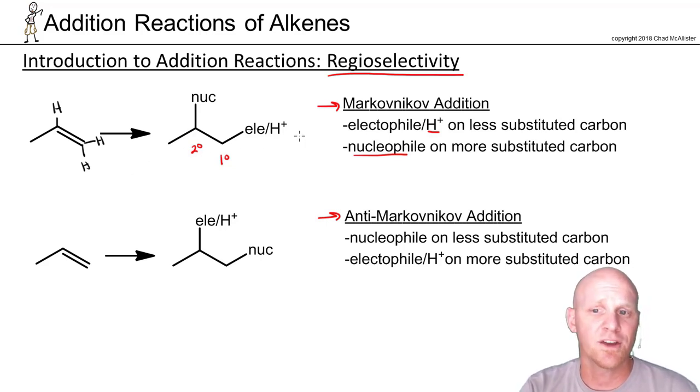Markovnikov's rule really comes down to as long as you're adding a hydrogen, the side with more hydrogens gets another one. That's what it ultimately comes down to, and a couple examples where we're actually not adding any hydrogens, that's obviously not going to be a sufficient rule. And the real rule, again, is that the electrophile goes on the less substituted side, the nucleophile on the more substituted side when it's Markovnikov addition, and the exact opposite when it's anti-Markovnikov. That's regioselectivity.